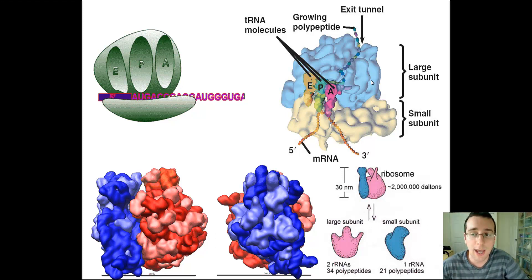The A site is where you add a new amino acid to the chain. The P site is where you leave the amino acid that was already added and is waiting for another one to be put next to it. And the E site is the exit site from which transfer RNAs, which are already discharged of their amino acid, are exiting from.